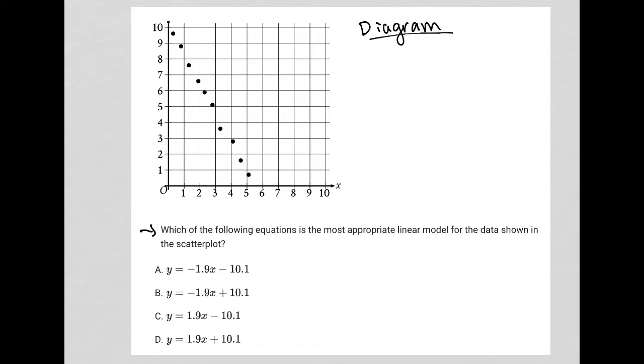The question says, which of the following equations is the most appropriate linear model for the data shown in the scatter plot? So in essence, if I were to draw a line of best fit through these points, it will look something like this.